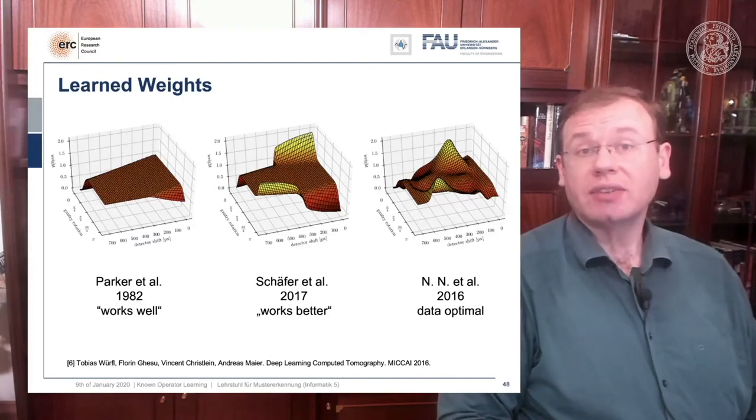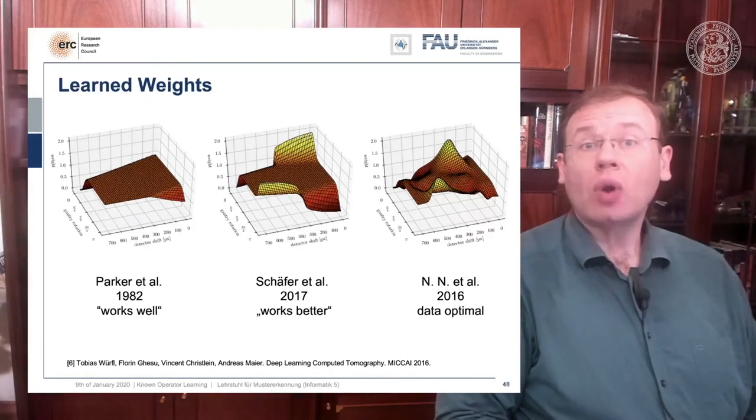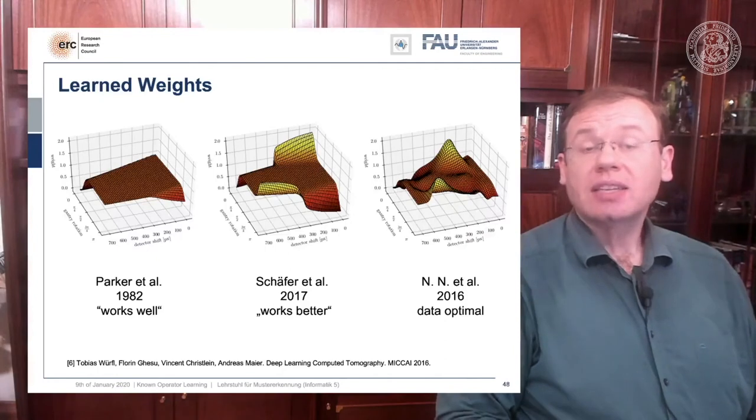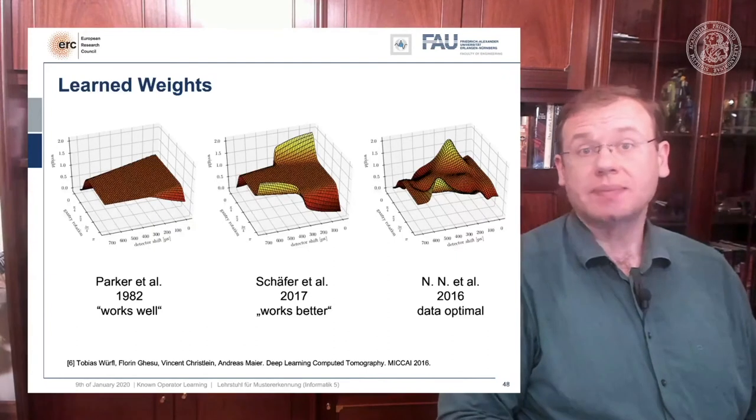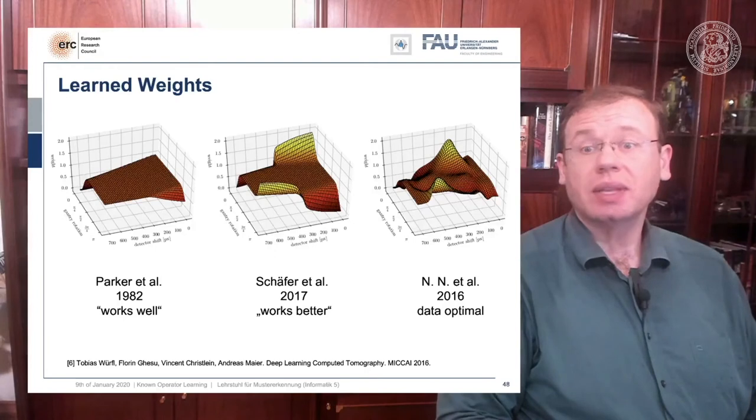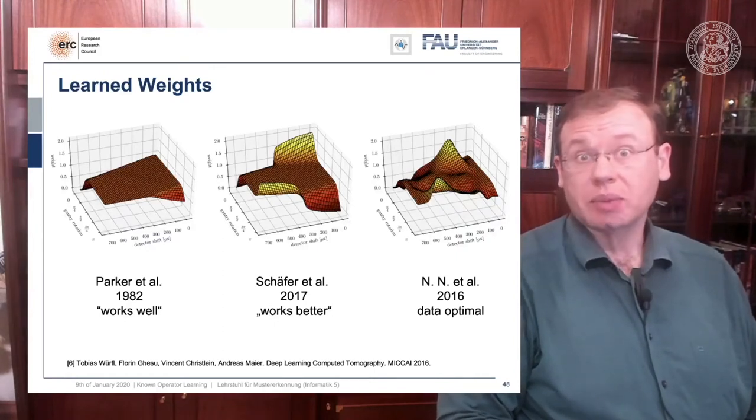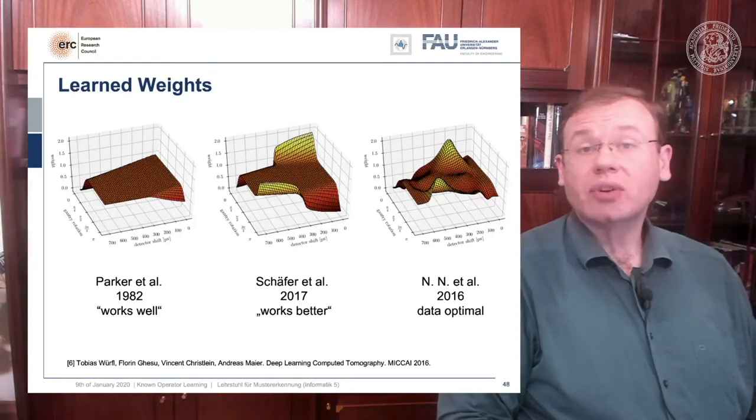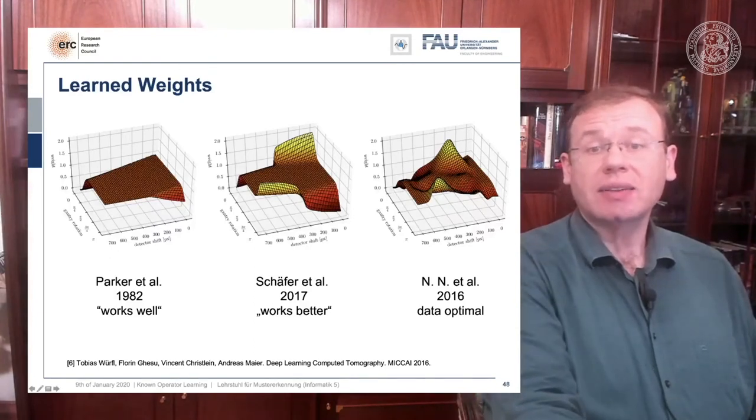You see it did significant changes to our Parker weights. In 2017 Schaefer et al published a heuristic how to fix these limited angle artifacts, and they suggested ramping up the weight of rays that run through the area where we are missing observations. They simply increase the weight in order to fix the deterministic mass loss. If you look at what they found works better in a heuristic, we can see that our neural network found a very similar solution and we can demonstrate that this is data optimal.